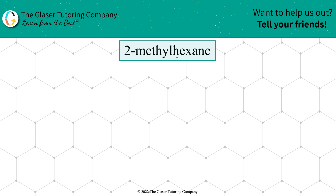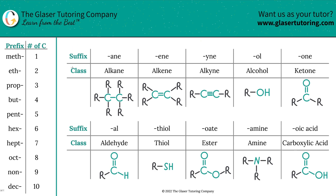The first thing is we have to start with the parent name. The parent name here is hexane. Now there's two parts to every parent: there's going to be a prefix 'hex' and a suffix 'ane'. We have to know what those two terms mean. Hex refers to six carbons — that's the prefix — and we have a table there representing the number of carbons. Then the suffix 'ane' represents an alkane, which is simply carbons with all single bonds.